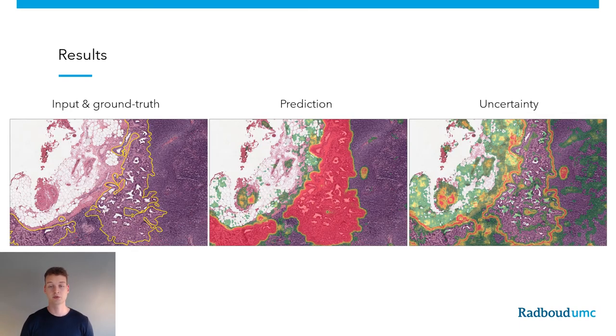In the results we show that this model is effective at detecting breast cancer metastasis in lymph node tissue while also providing informative uncertainty estimate heatmaps.